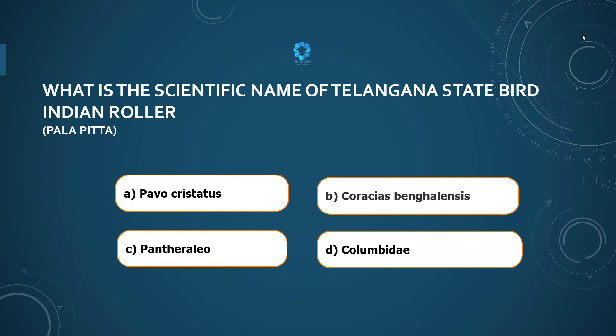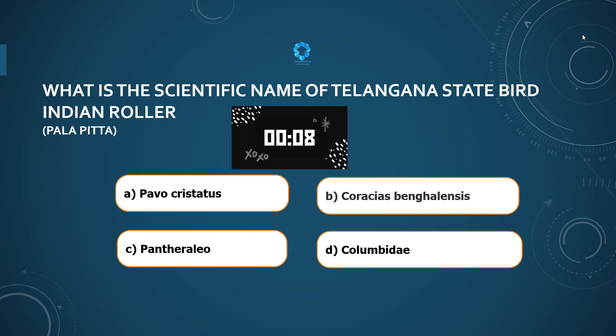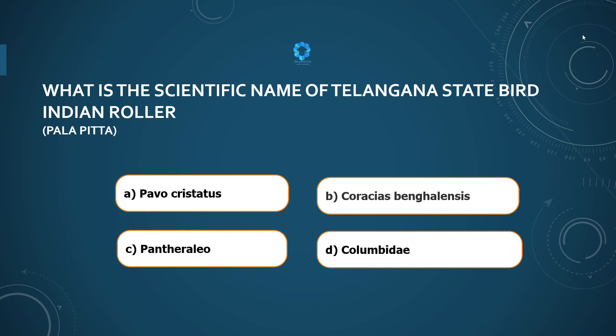What is the scientific name of the Telangana state bird, the Indian Roller or Pala Pitta? The answer is Coracias bengalensis.